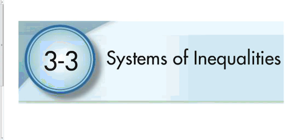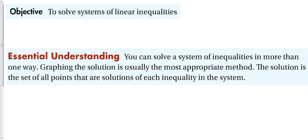Section 3-3: Systems of Inequalities. Previously when we talked about systems of equations, we were looking for a point where two lines intersect. Now, if you recall back to graphing a two-variable inequality, we're going to have to graph some sort of region, and with a system of inequalities we want to figure out where those two regions overlap.